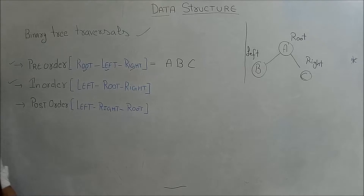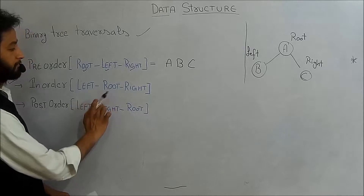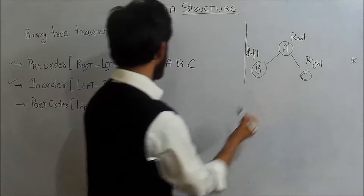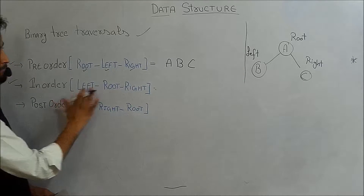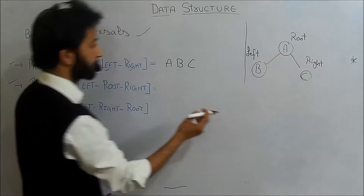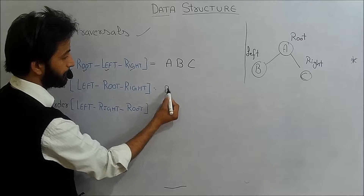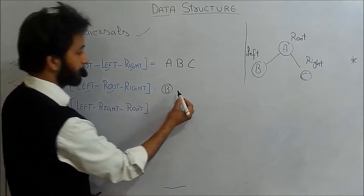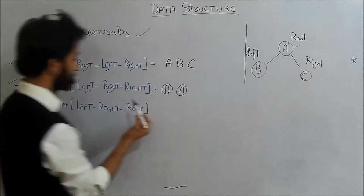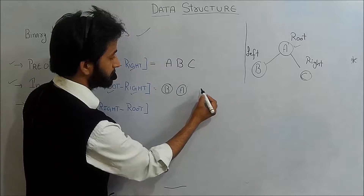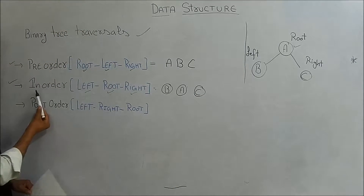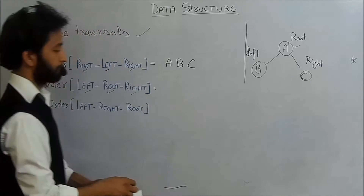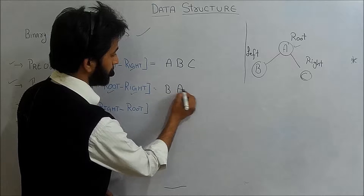After pre-order, we have in-order traversal. In in-order traversal, we write the left subtree first, then the root, then the right. So the in-order traversal of the given binary tree is: left child B, then root A, then right child C. So in-order traversal is B, A, C.